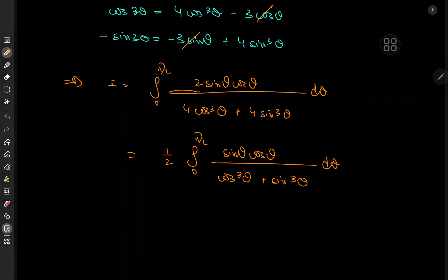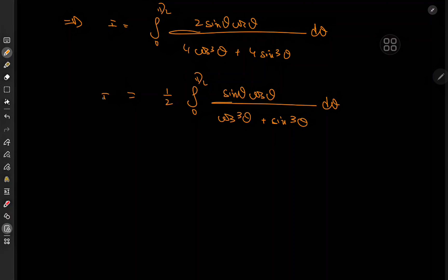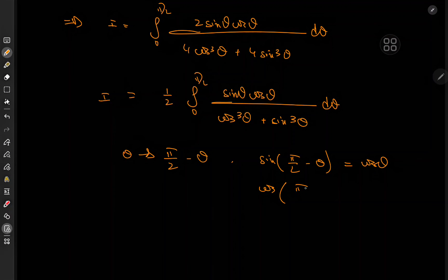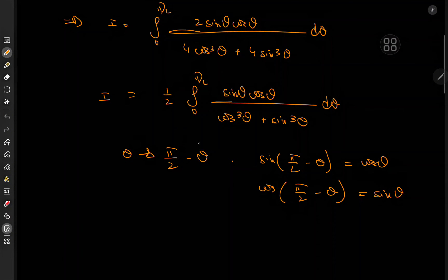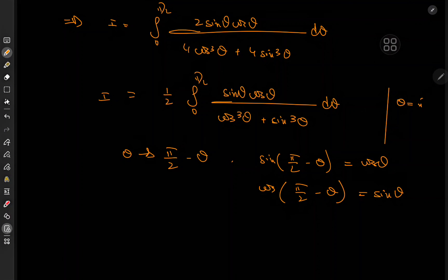A cool thing about this integral is some symmetry. If we make the transformation θ → π/2 − θ, then sin(π/2 − θ) = cosθ and cos(π/2 − θ) = sinθ. The limits are unbothered by this phase shift after accounting for the sign from dθ. The integral is unchanged by this transformation, meaning there is a symmetry with respect to the vertical line through θ = π/4.